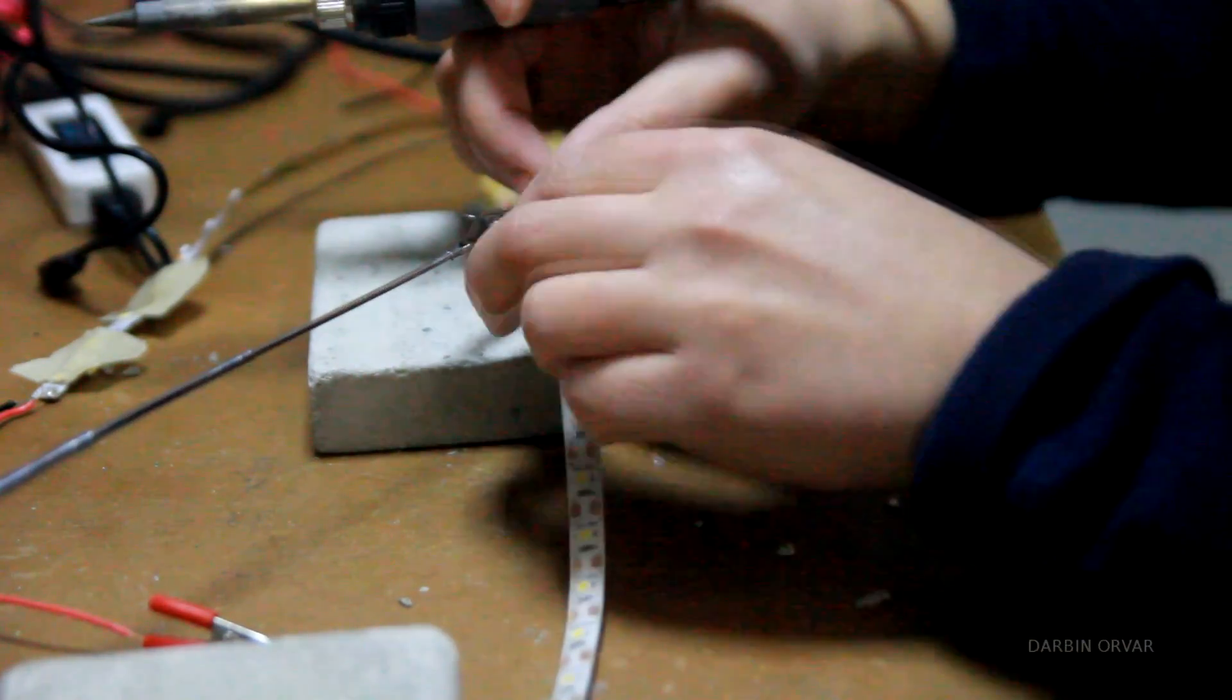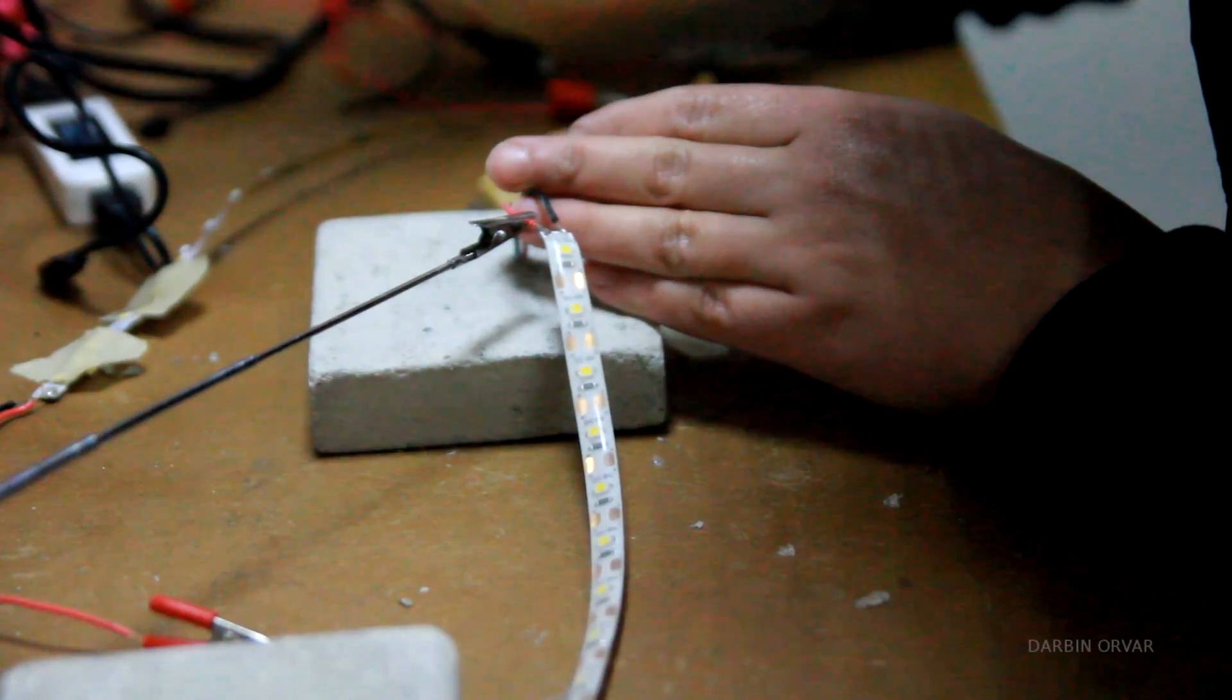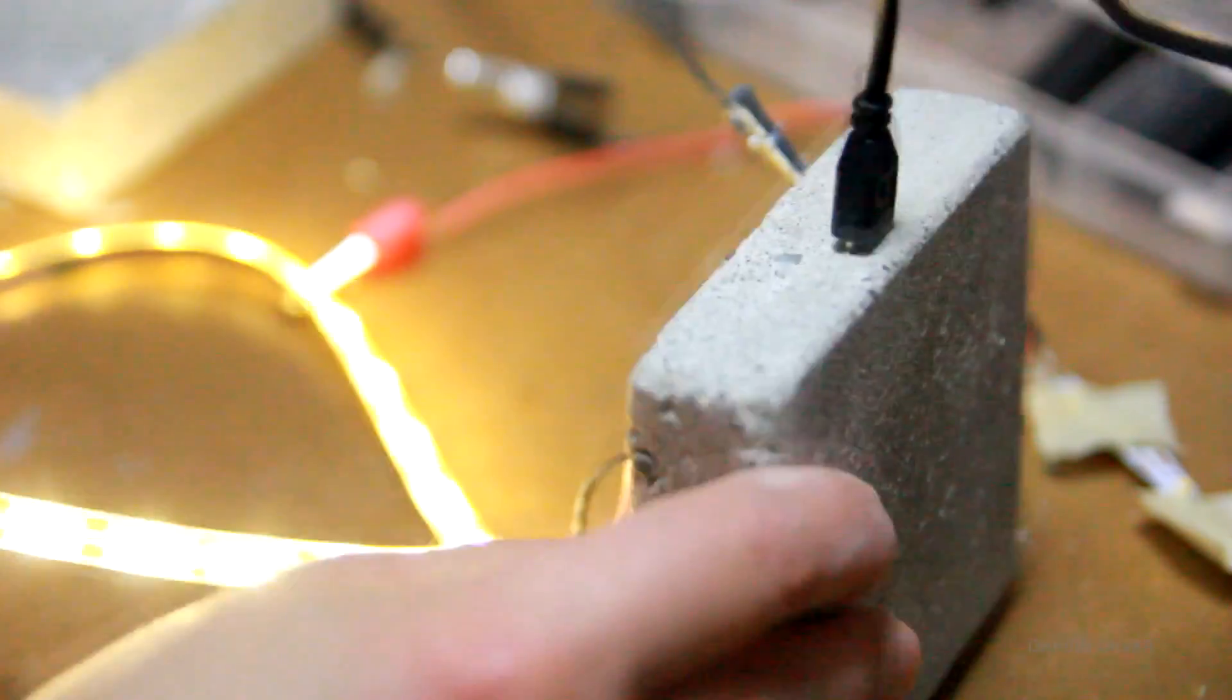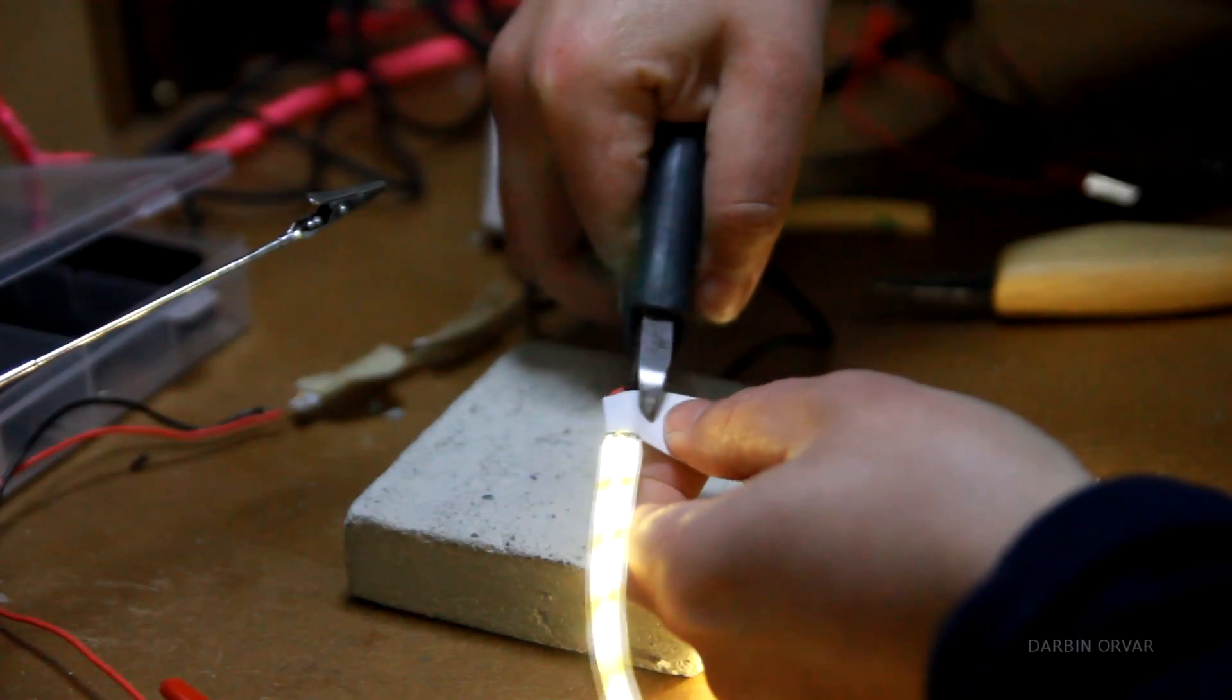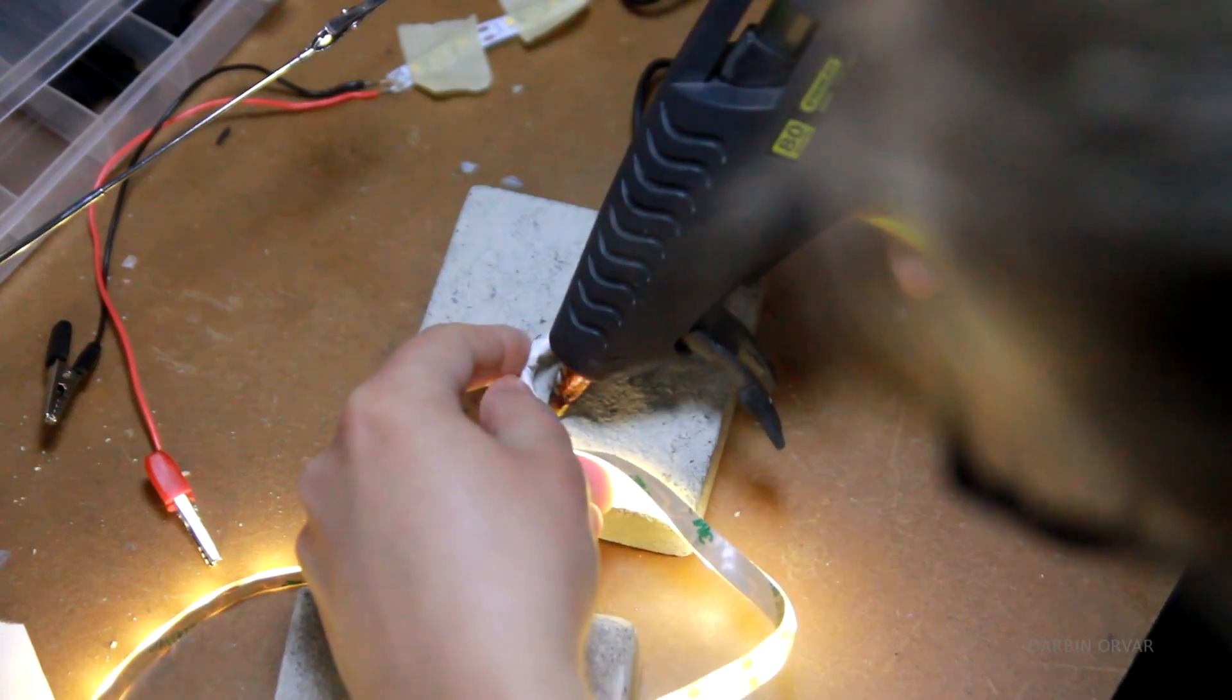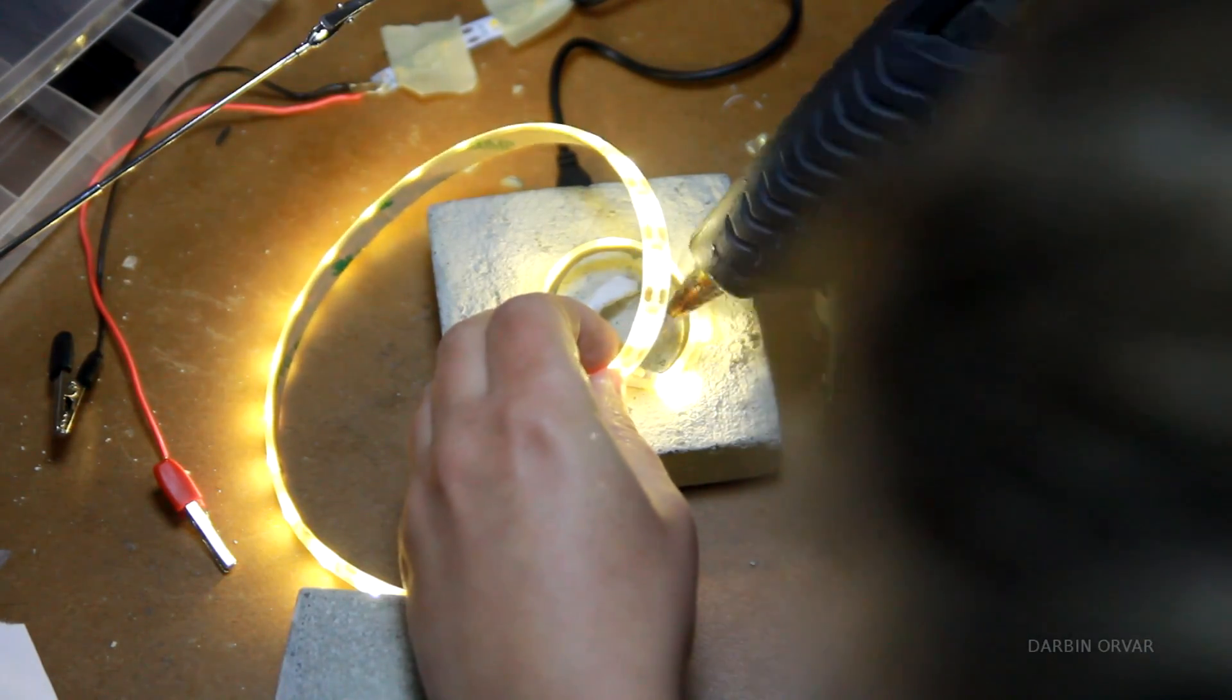So the next step here was to solder on the LED strip to the wire coming up from the concrete. Now, to secure the lights in the middle of the block, I simply used hot glue. And I kind of glued the strips on top of each other into this tower thing.